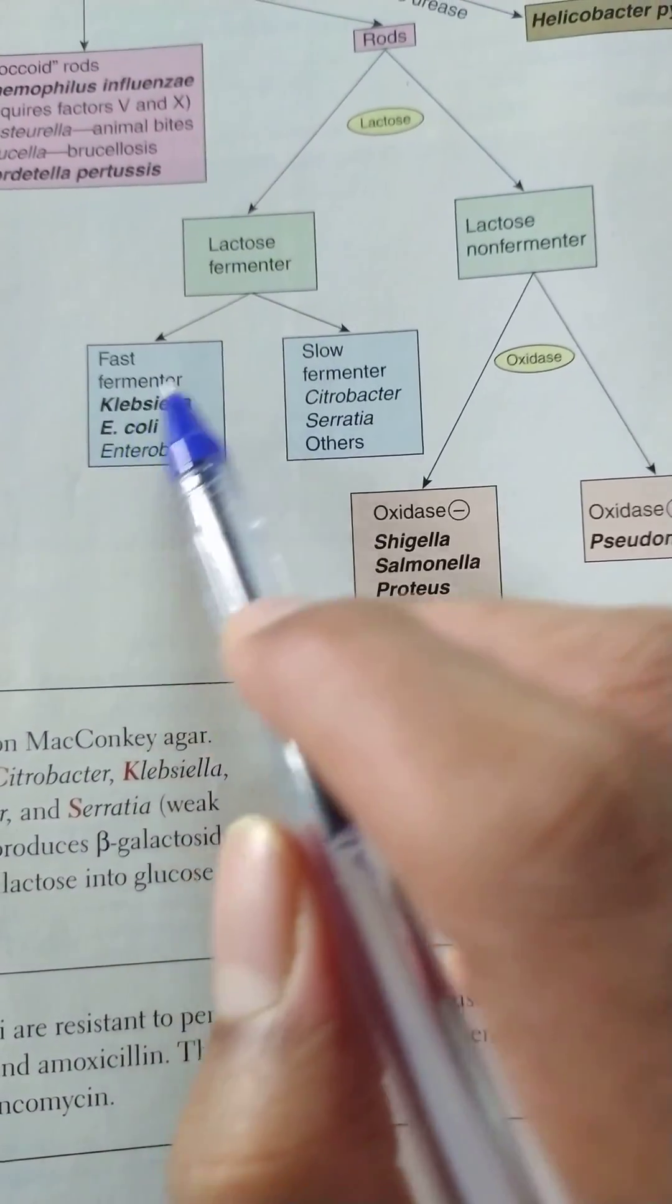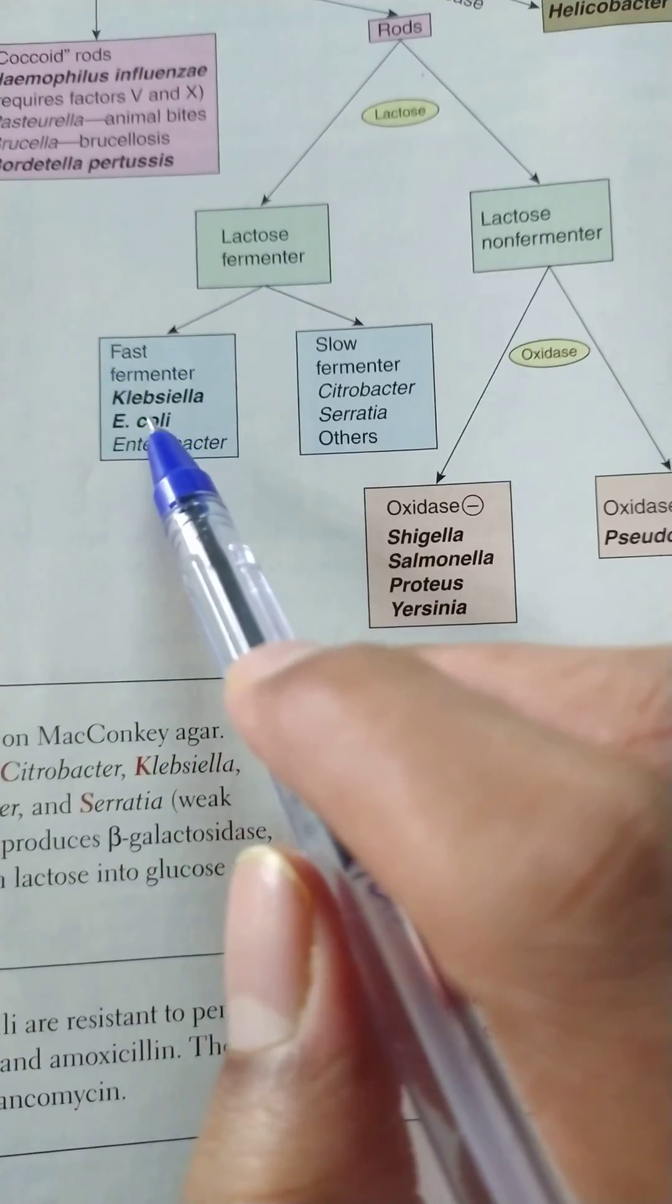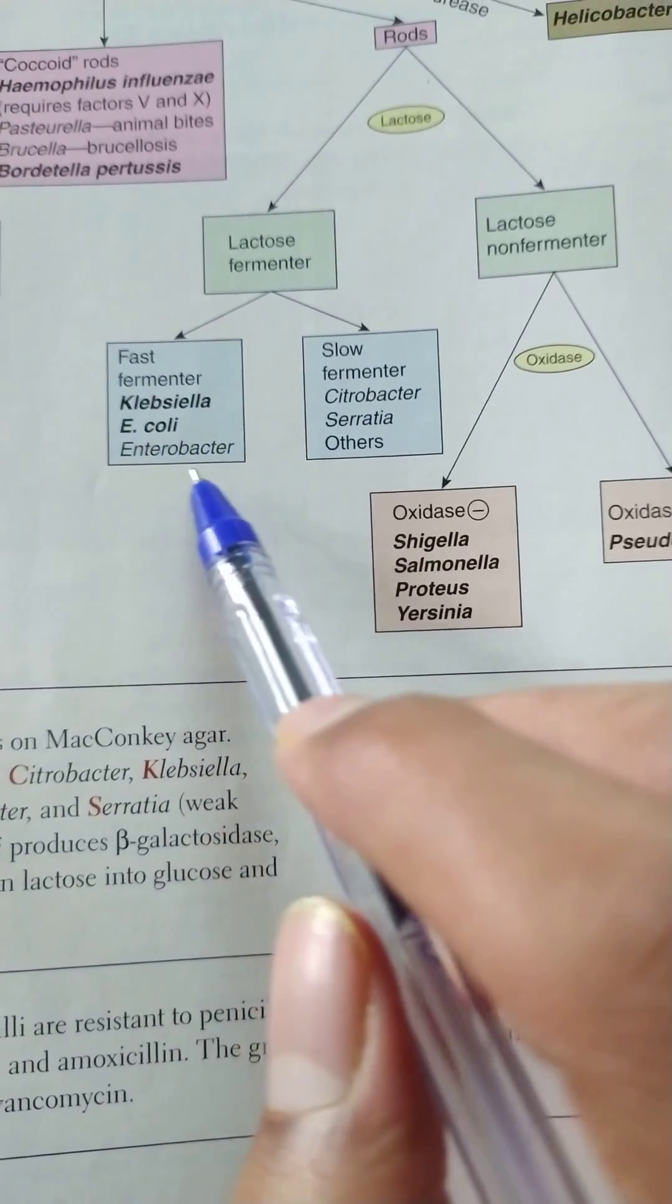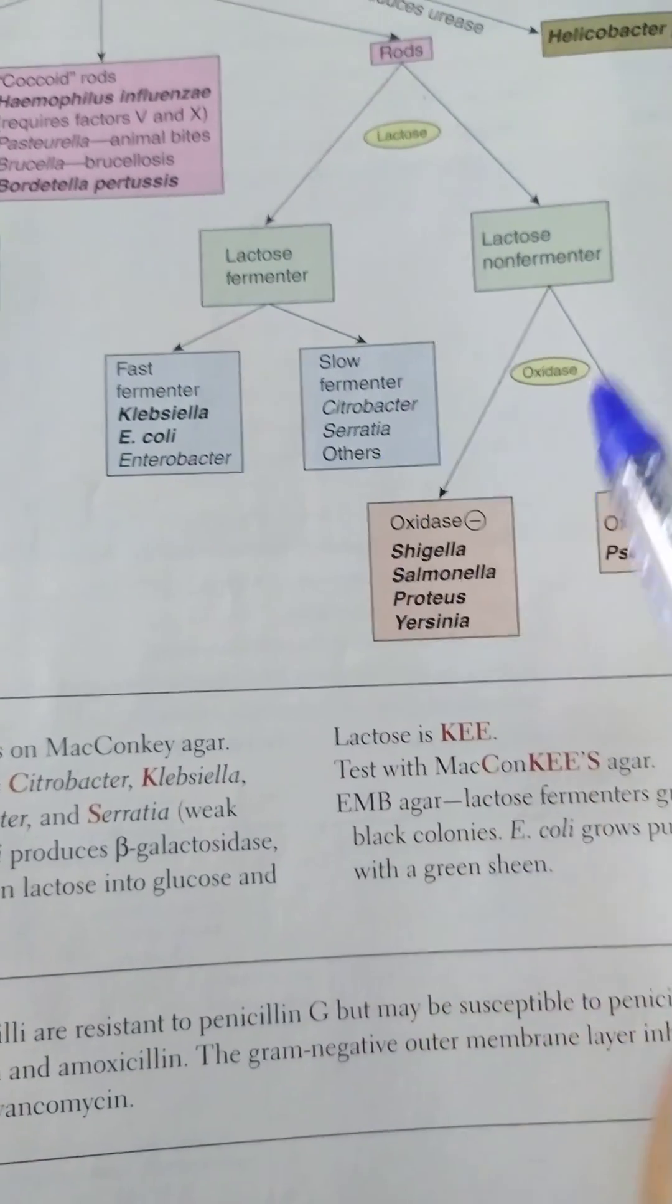Coming to the lactose fermenter, the fast fermenter is Klebsiella, E. coli, Enterobacter, and the slow fermenters are Citrobacter, Serratia, etc.